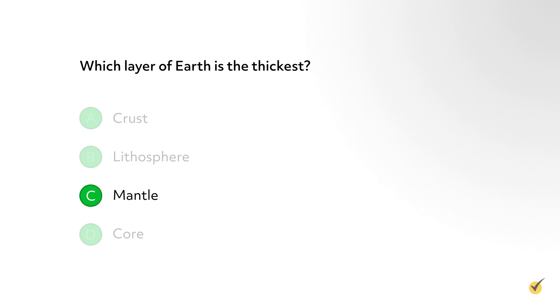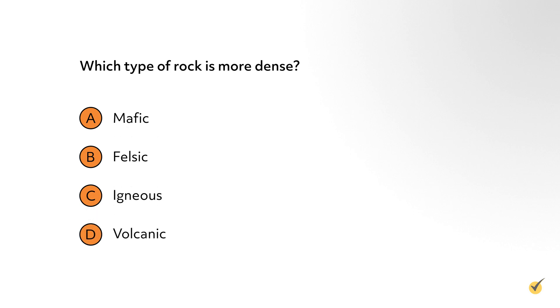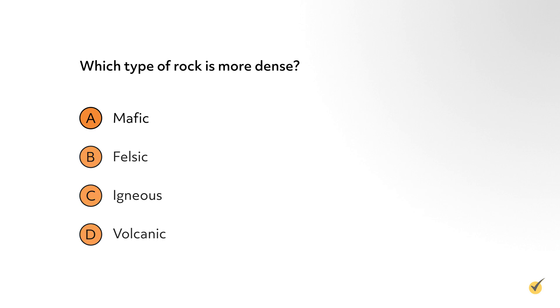Number three: which type of rock is more dense? A, mafic. B, felsic. C, igneous. Or D, volcanic. Volcanic rocks are igneous, and igneous rocks can be mafic or felsic. Mafic rocks are more dense than felsic rocks, so the correct answer is A, mafic. That's all for this review — thanks for watching and happy studying.